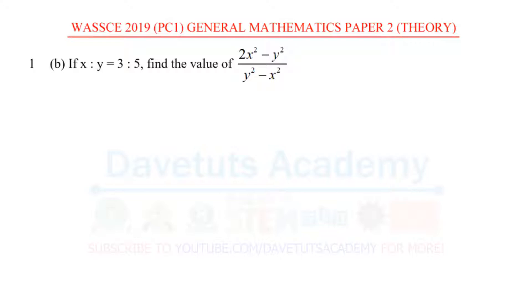In this question we are told that if x ratio y is equal to 3 ratio 5, we should find the value of 2x squared minus y squared all over y squared minus x squared.